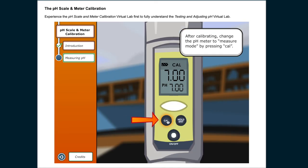After calibrating, change the pH meter to measure mode by pressing CAL.